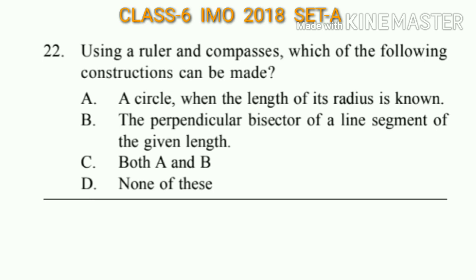Question number 22: Using a ruler and compasses, which of the following constructions can be made? The answer will be option C, both A and B. A circle can be made when the length of its radius is known, and the perpendicular bisector of a line segment of given length can also be made. So the answer is option C, that is both A and B.